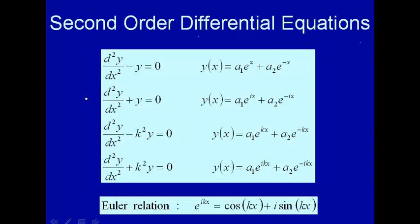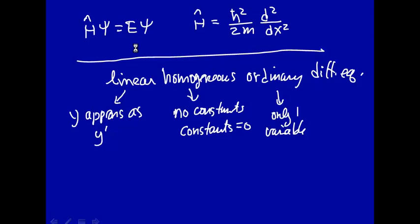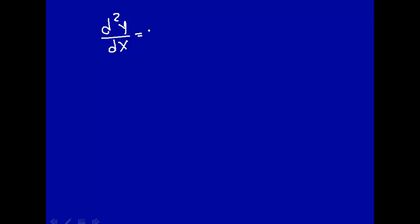So these are linear, homogeneous, ordinary differential equations. y always appears to the first power, so it's linear. Homogeneous because all the constants are equal to zero. And they're ordinary because there's only a single variable, x — we don't have partial differential equations. So with that, let's look at the first differential equation and see how we can solve it. y here is a function of x, and we're taking the second derivative with respect to x. One technique for solving differential equations is to develop a trial solution based on our mathematical intuition, and then put that trial solution into the differential equation and see what we can learn.